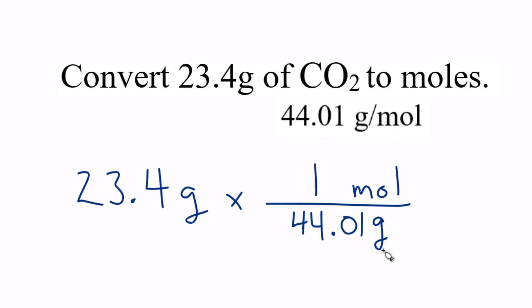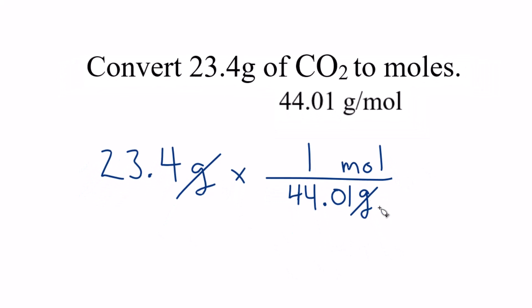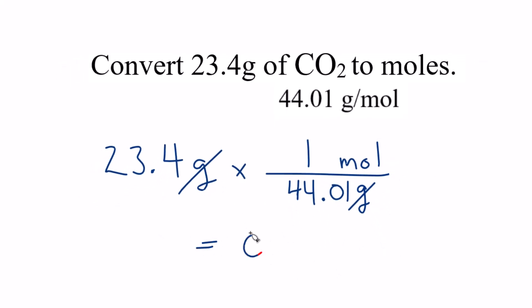So we multiply and then we divide. Grams cancel out, just like last time. And we get the same answer, 0.532 moles of carbon dioxide. That's the other way you could do it.